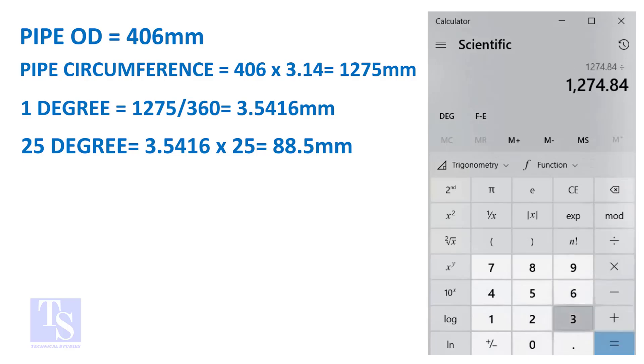And finally, multiply the 1 degree arc length by 25. Now you have the arc length of 25 degrees. You can apply this formula to get the arc length of any degree.